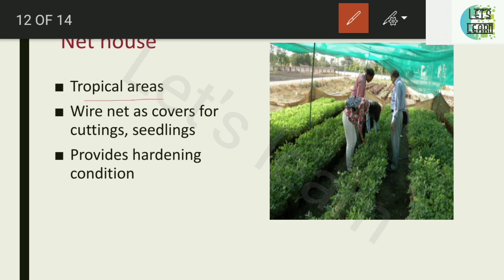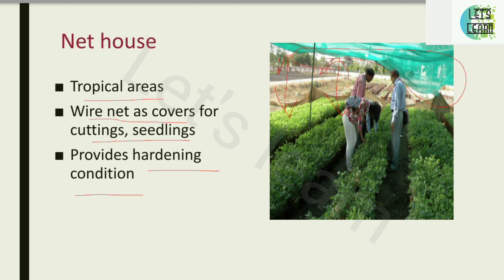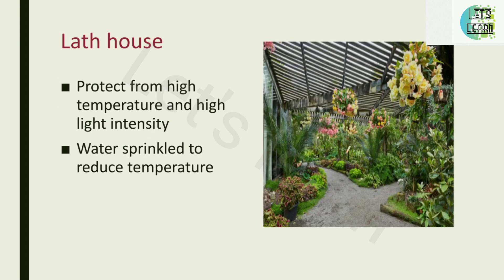The net house is used mostly in tropical areas. A wire net is used as a cover for cuttings and seedlings, providing a hardening condition for the plants. You can see the green-colored net house structure in the image — the entire area is covered by this net.